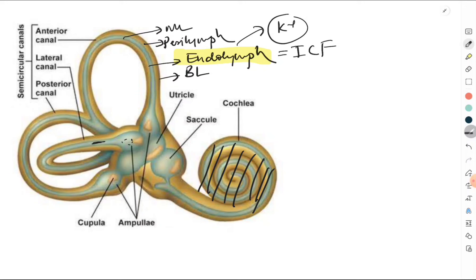The cochlea is not part of the vestibular apparatus — it is concerned only with hearing. The parts that form the vestibular apparatus are the three semicircular canals: the anterior, lateral, and posterior semicircular canals. The vestibule, which connects the cochlea and the semicircular canals, contains two structures: the utricle and the saccule. So the vestibular apparatus consists of the three semicircular canals, the utricle, and the saccule.